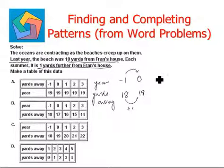Then 1, that is next year, it will be another plus 1 yard away, that will be 20. Two years from now, it will be 21 yards. Three years from now, it will be 22 yards away. So every year, it is being increased by 1 yard.